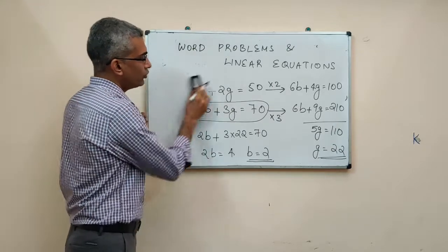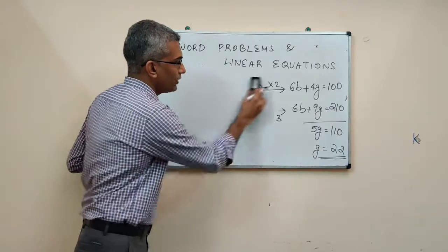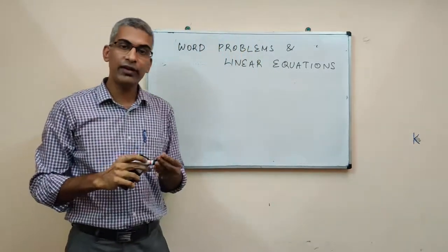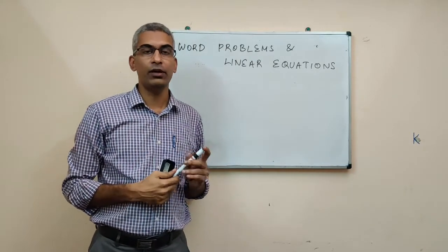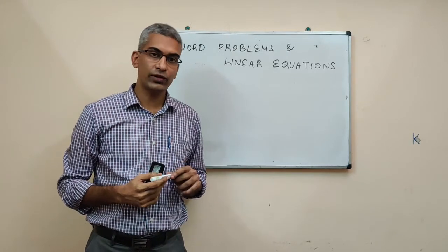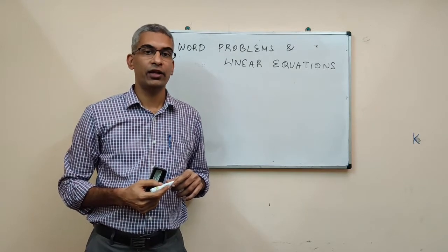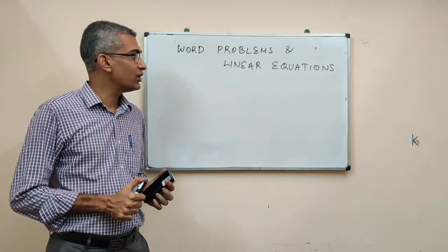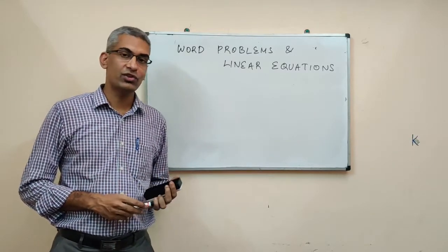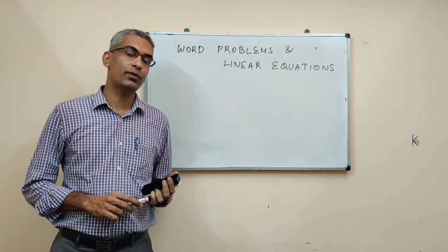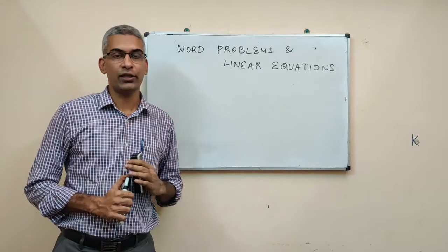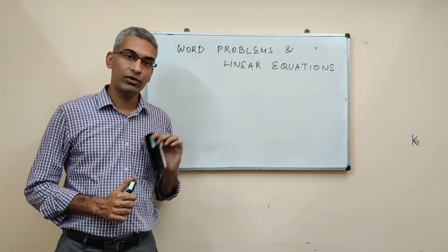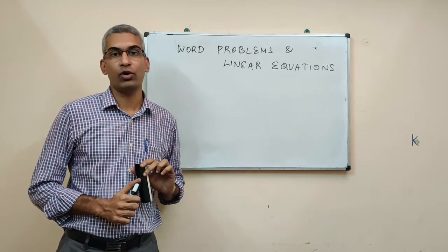In this discussion we looked at two situations where we used linear equations to solve word problems. In the first question we had a single variable linear equation, and in the second problem we had a two variable linear equation. When you get a typical word problem, the first thing you should do is understand the situation clearly and try to express it in terms of algebra. Understanding the situation clearly is essential — there is no substitute for this. With practice you will be able to solve more and more complicated word problems. Thank you.